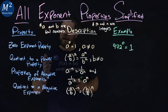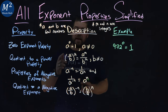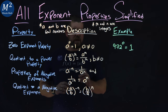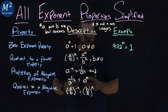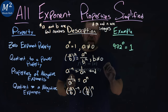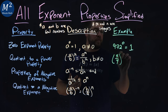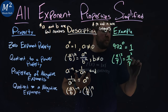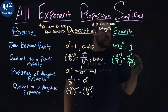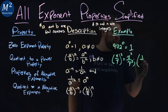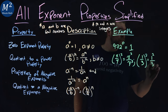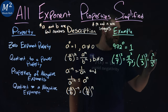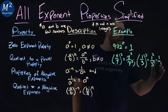The second new property is quotient to a power: a over b all to the m power equals a to the m over b to the m, where b is not equal to zero. For example, x over y to the third power equals x to the third over y to the third. With numbers, one over three all squared equals one squared over three squared, which simplifies to one over nine.